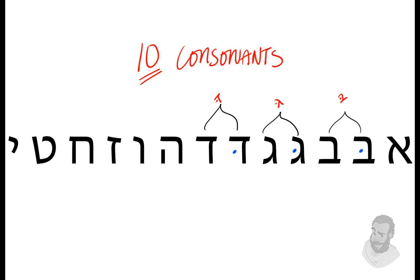So we have ten consonants. The Beith and Veith represent one consonant. Gimel and Gimel represent one consonant. Daleth and Zaleth represent one consonant — the fricative portion. Beith, Gimel, and Daleth are from the same consonant. So: Aleph represents one, Beith and Veith represents two, Gimel and Gimel represents three, Daleth and Zaleth represent four, He represents five, Wa represents six, seven is Zayin, Hayith is eight, Taith is nine, and Yodh is ten. So there are ten consonants.